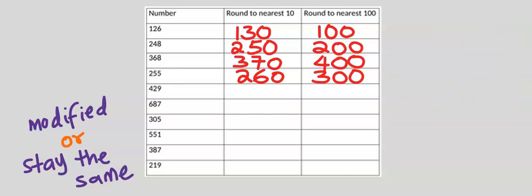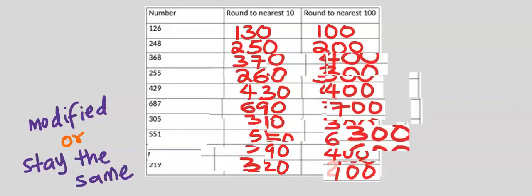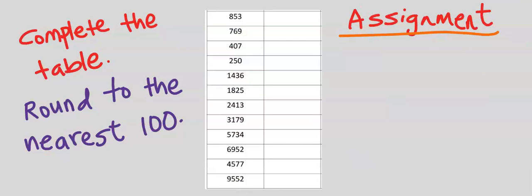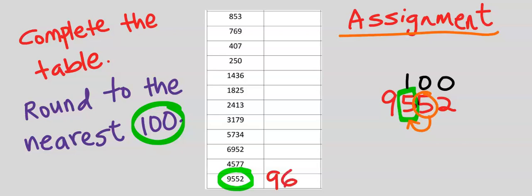Now that you understand how it works, complete the table. Round to the nearest hundred. For 9552, to the nearest hundred is going to be 001. I'm going to be modifying 5 — 5 can modify this 5 to become 6, and the 5 and 2 acquire zeros. This is our answer.